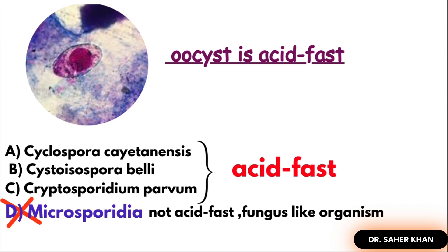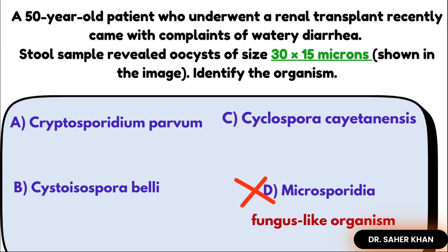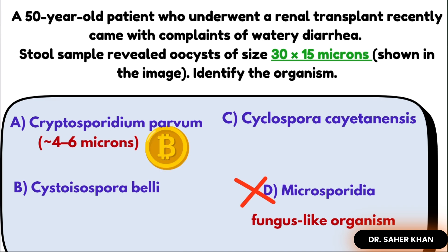The most important clue is the size of the oocyst — 30 × 15 microns. Out of the three acid-fast organisms, two are very small. Cryptosporidium is very small — think of crypto like cryptocurrency, a bitcoin coin, small in size. Similarly, cyclospora is also small, around 8 to 10 microns.